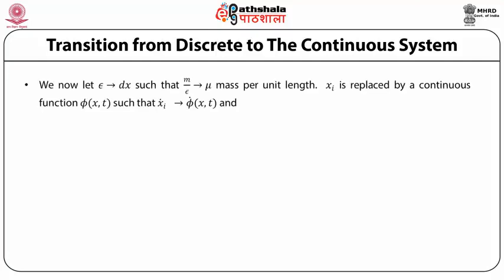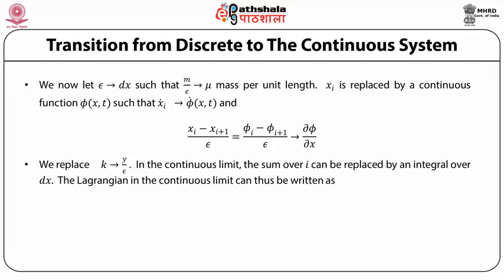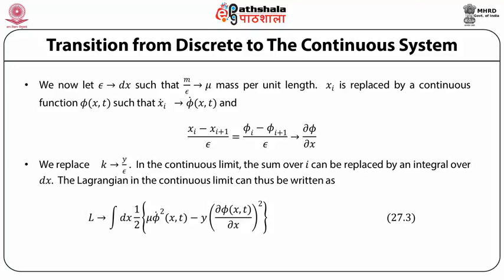We now let epsilon tend to dx such that μ = m/epsilon tends to mass per unit length. x_i is replaced by a continuous function phi(x,t) such that ẋ_i tends to φ̇(x,t), and (x_i − x_{i+1})/epsilon tends to ∂φ/∂x. We replace k*a by epsilon. In the continuous limit, the sum over i can be replaced by an integral over dx. The Lagrangian in the continuous limit can thus be written as L → ∫dx (1/2)[μ φ̇²(x,t) − Y (∂φ(x,t)/∂x)²].